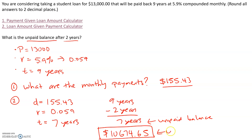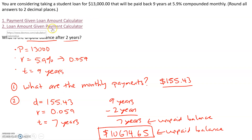This is the unpaid balance. So for problems involving unpaid balance, always start by finding the monthly payment using the first calculator. Then go to the second calculator, which calculates the loan amount given the monthly payment. Put in the monthly payment, the interest rate, and how much time is still left to pay.